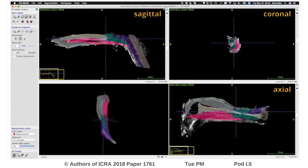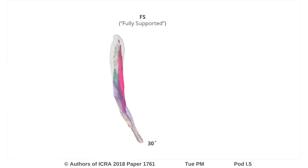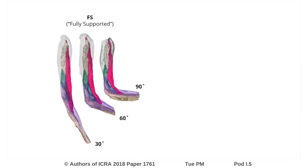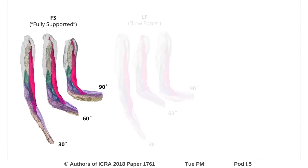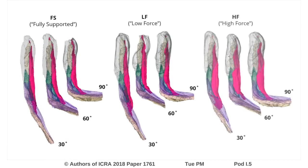Volumetric data of the biceps brachii and surrounding structures were then manually extracted. These extracted volumes show substantial deformation under both changes in elbow angle and changes in muscle load, confirming the importance of modeling both signal sources.